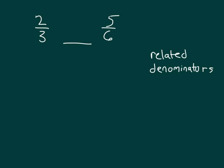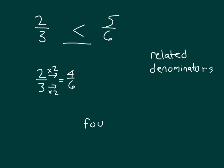Here, we're comparing two-thirds with five-sixths. In this case, we have related denominators. Since we have related denominators, we will find a common denominator. The relationship between three and six is that three times two equals six. So we can rename two-thirds as four-sixths, and so we're comparing four-sixths with five-sixths. I know that four-sixths is less than five-sixths — we have a common unit that we are comparing.